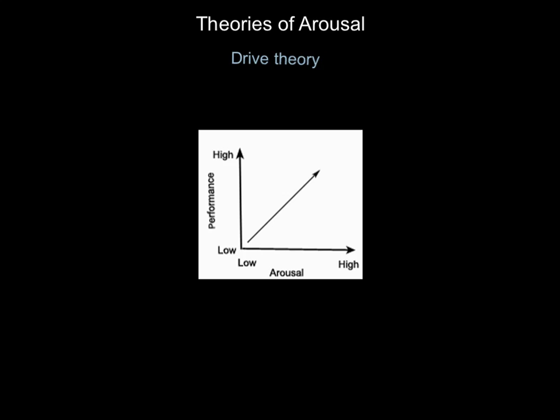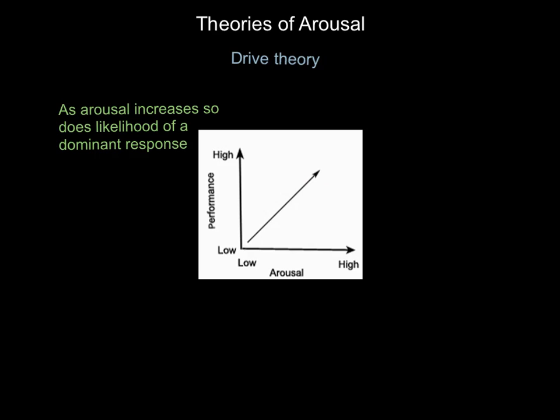Arousal is along the x-axis and performance is on the y-axis. What we have is a linear relationship — as arousal increases, our performance gets higher and higher. As arousal increases, so does our chance of producing a dominant response. A dominant response is our main way of doing a particular skill.